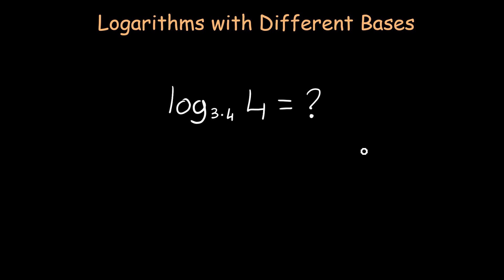For example, here we have a logarithm with base 3.4, right there, and we have an argument of 4.